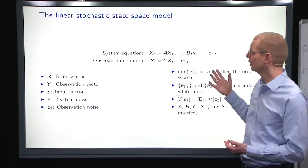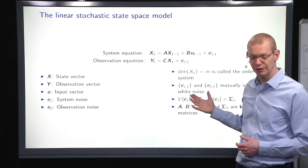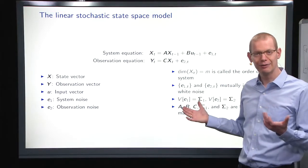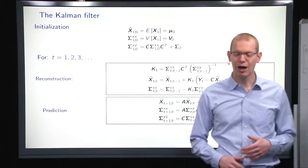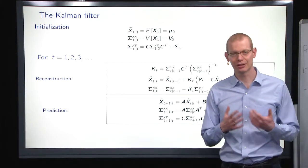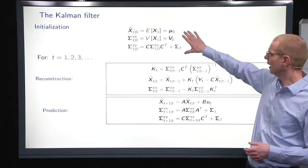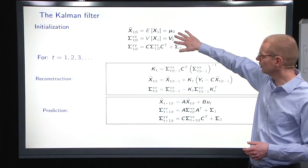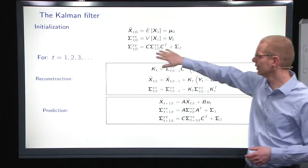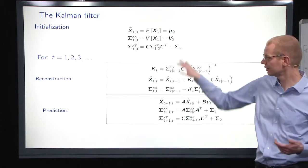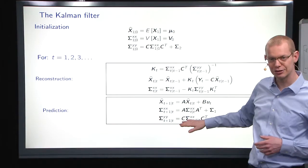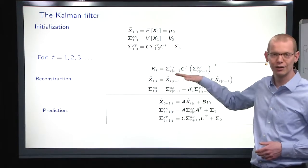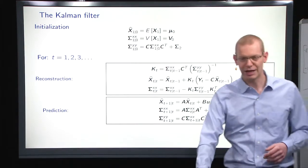Let us return to the linear state space model that we have up here. Everything here is supposed to be known as well. And what we looked at previously is the Kalman filter, where we have initial values for mean value, initial variance, and thereby we also get initial variance of the observations for the states. And then we have the reconstruction and prediction step, and then we iterate these one at a time.